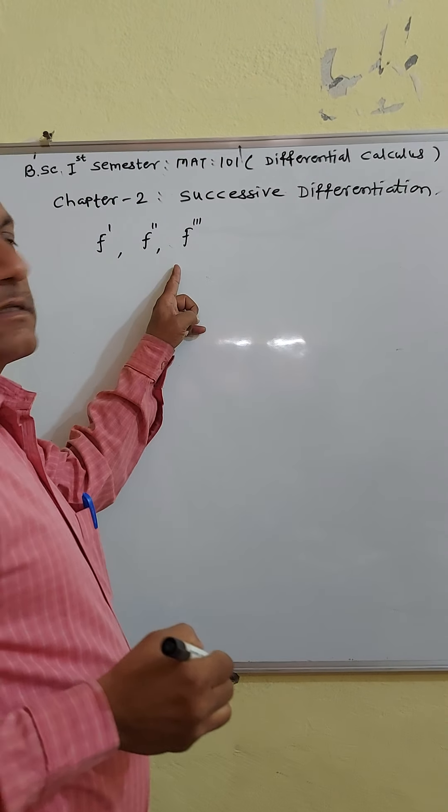If we write y is equal to f of x, then y1, y2, y3, up to yn are the successive derivatives of y.